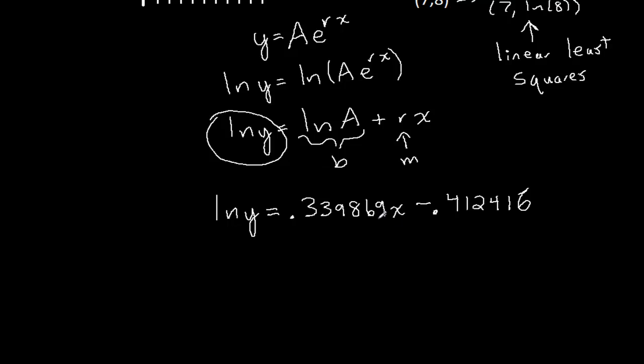Okay, so this coefficient in front of x, that's my m. Excuse me, that's the slope, so that's r. Let's rewrite that, that's r. That's our growth rate. Exponential rate of growth. Since it's positive, it's growth. If it were negative, it would be decay.